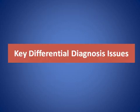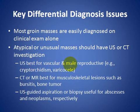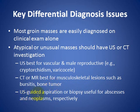The key for differential diagnosis: most groin masses are easily diagnosed on clinical examination alone. An atypical or unusual mass should have ultrasound or CT investigation. Ultrasound is best for vascular and male reproductive causes like cryptorchidism and varicocele. CT or MRI is good for musculoskeletal lesions such as bursitis and bone tumor. Ultrasound-guided aspiration or biopsy is useful for abscesses and neoplasms respectively.